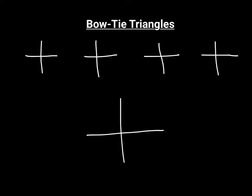You always put the hypotenuse of the triangle diagonally out into that quadrant, and you connect that to your x-axis. In this case, we're going to connect down to the x-axis. So in the first quadrant, this is how we would draw a right triangle. If we were in the second quadrant, we would go diagonally out into the second quadrant, and you always connect to the x-axis — never to the y-axis. So this is what a second quadrant right triangle would look like.